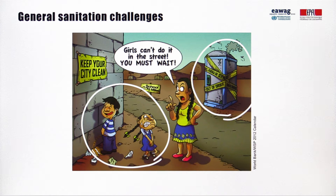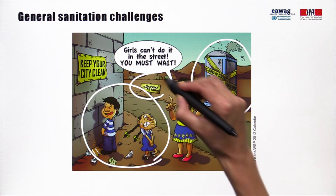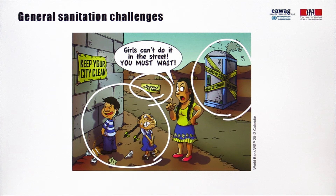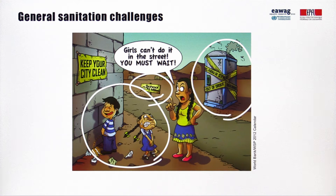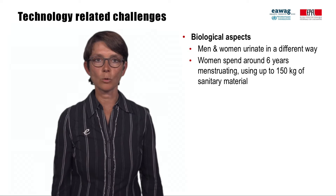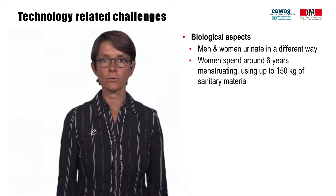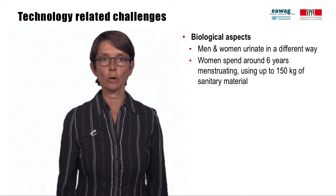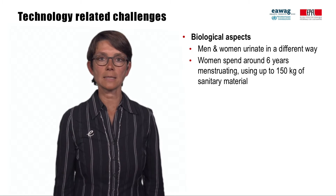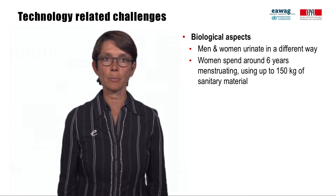Girls' school performance is influenced by sanitation. Many girls do not attend school because of lack of proper sanitation, especially in secondary education where menstrual hygiene becomes a matter. School absenteeism and drop-out of girls lead to gaps in education between girls and boys. The most sophisticated technology does not solve any problem if it is not adopted by the users — one of the lessons sometimes painfully learned in the past decades.